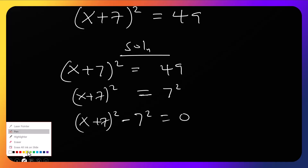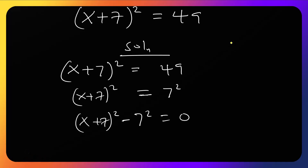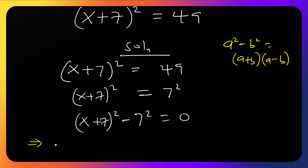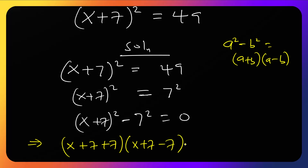When we have a squared minus b squared, that's the same as (a + b)(a - b). So we confirm the difference of two squares here. That gives us (x + 7 + 7)(x + 7 - 7) equals zero.